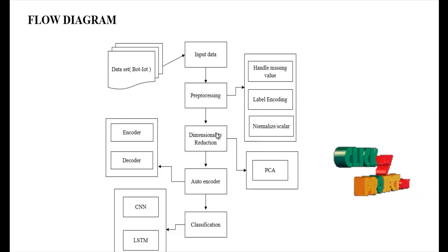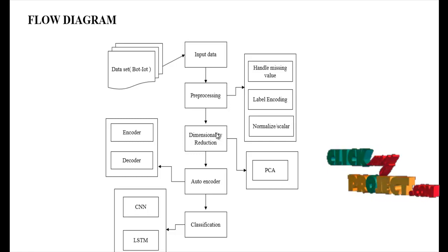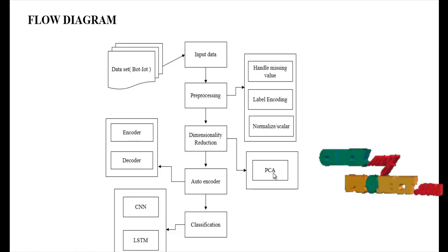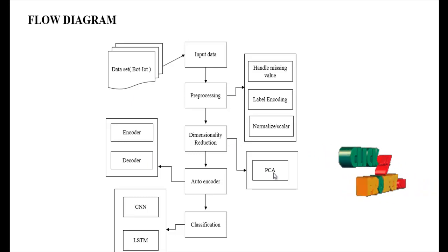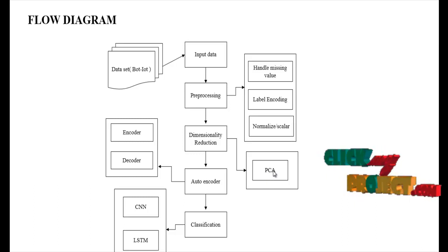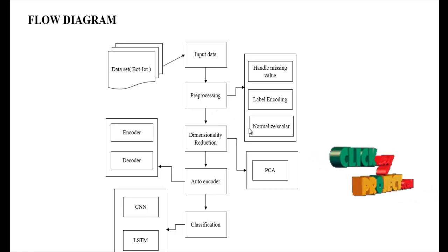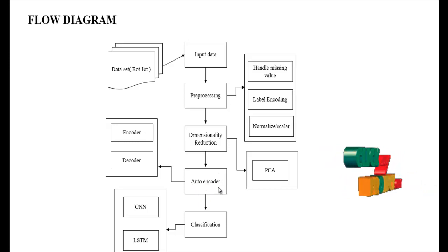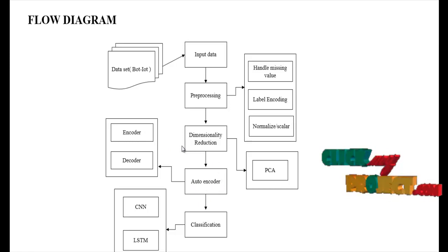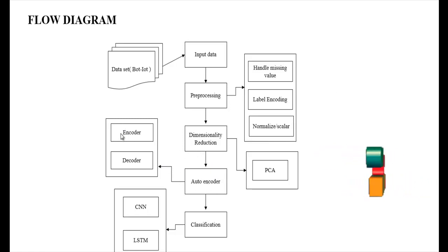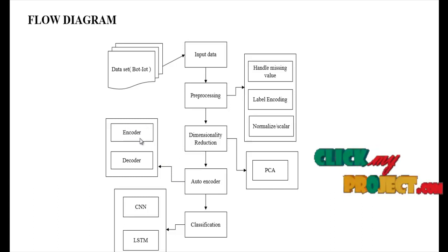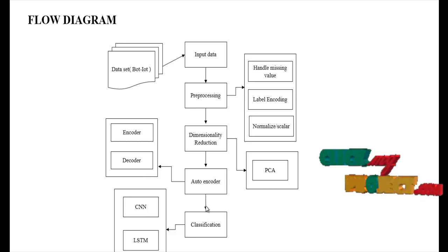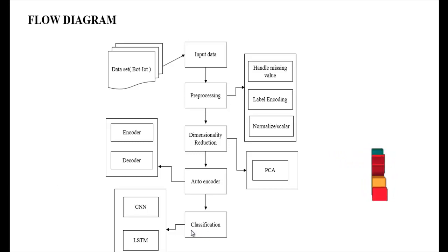The next step is dimensionality reduction, which is a feature extraction step to extract features from the input data. We use Principal Component Analysis (PCA) to reduce the dimensionality of the preprocessed data. Then we implement the autoencoder, which compresses the raw data. It has two portions: an encoder network layer and a decoder network layer.